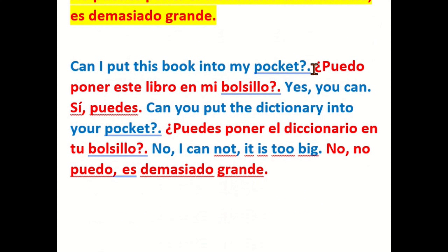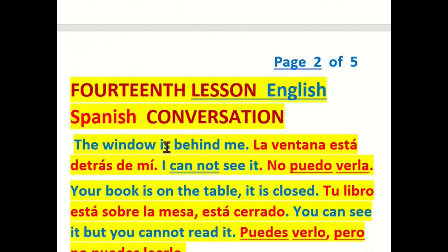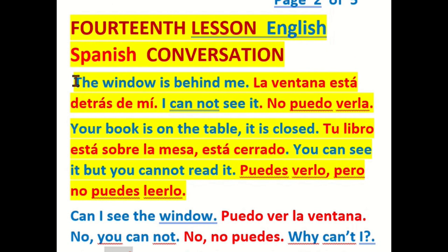Can I put this book into my pocket? — ¿Puedo poner este libro en mi bolsillo? Yes, you can — sí, puedes. Can you put the dictionary into your pocket? — ¿Puedes poner el diccionario en tu bolsillo? No, I cannot, it is too big — no, no puedo, es demasiado grande. The window is behind me — la ventana está detrás de mí; I cannot see it — no puedo verla. Your book is on the table, it is closed — tu libro está sobre la mesa, está cerrado. You can see it but you cannot read it — puedes verlo pero no puedes leerlo.